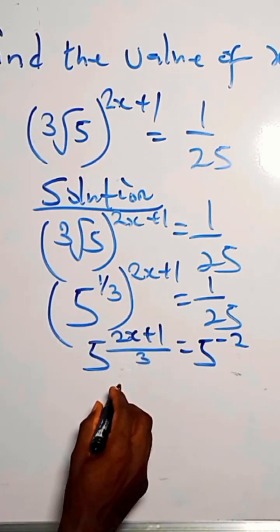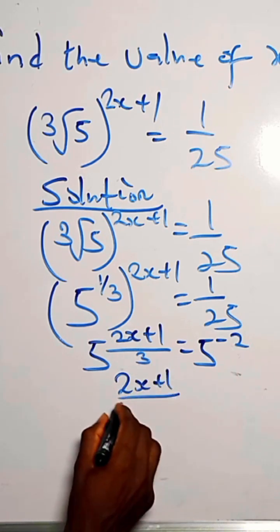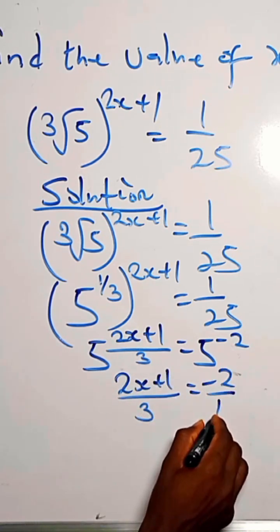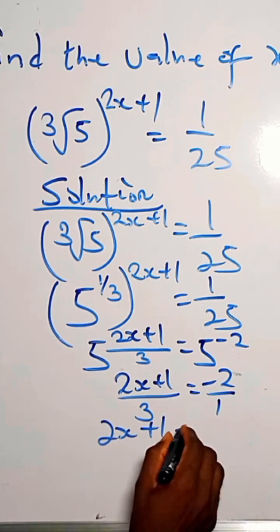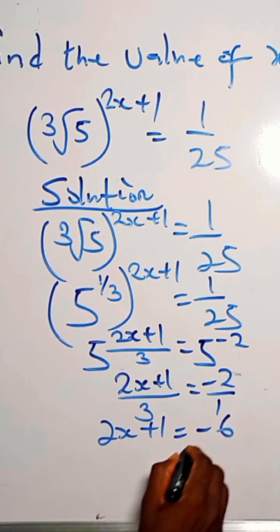Since we have the same base, we have 2x plus 1 divided by 3 equals minus 2. We cross multiply, so we have 2x plus 1 equals 3 times minus 2, that is minus 6.